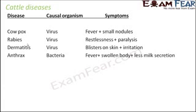Anthrax is very commonly seen in cattle. The animal normally has fever, a swollen body, and less milk secretion. You generally see it in cows or buffaloes — if the cow or buffalo is suffering from anthrax, they do not give a lot of milk.